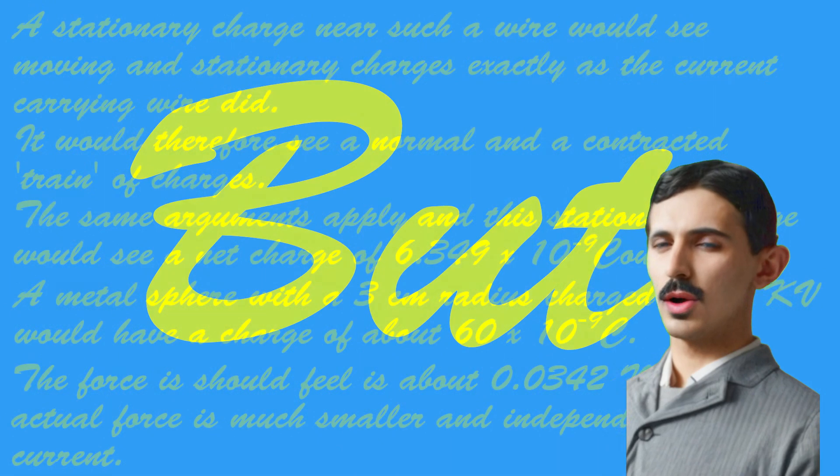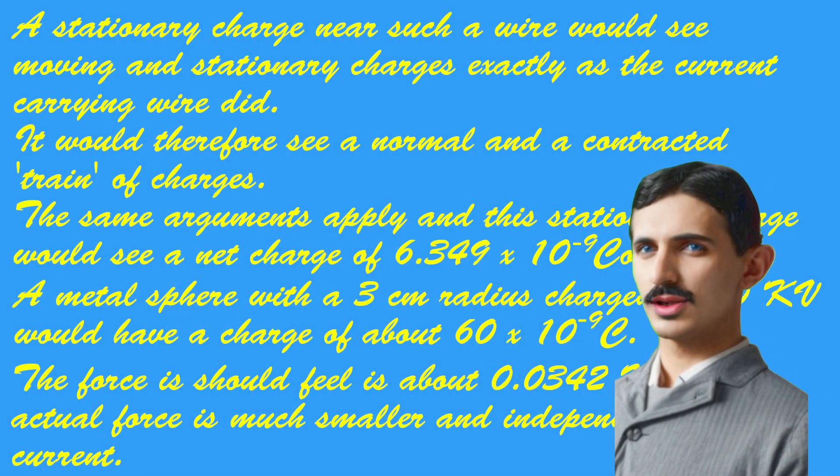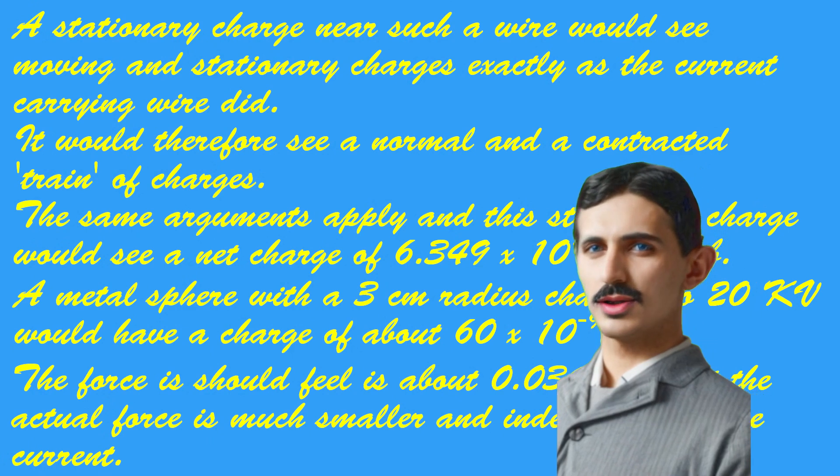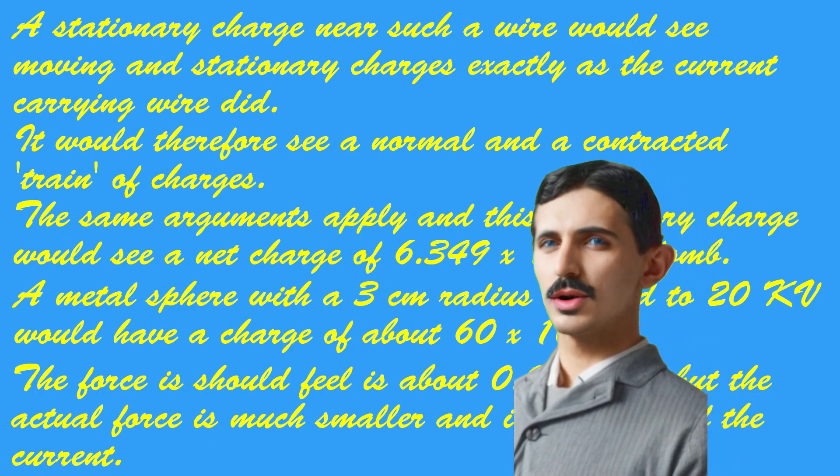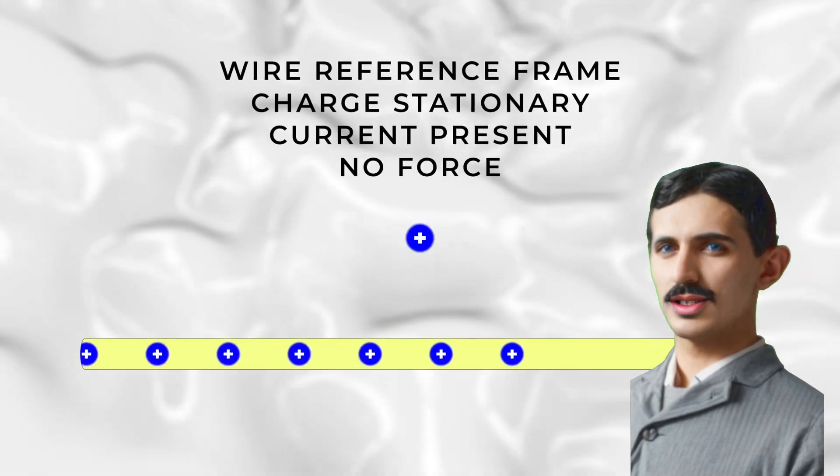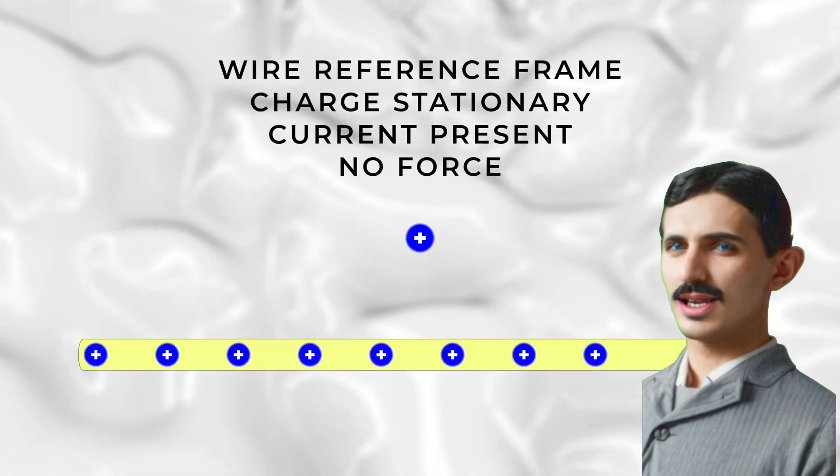However, we can apply the exact same line of reasoning to a stationary charge outside of this current-carrying wire. A small metal sphere charged to 20 kilovolts should feel about 10 times the force we just calculated between the two wires. This is not happening, and therefore invalidates this theory.